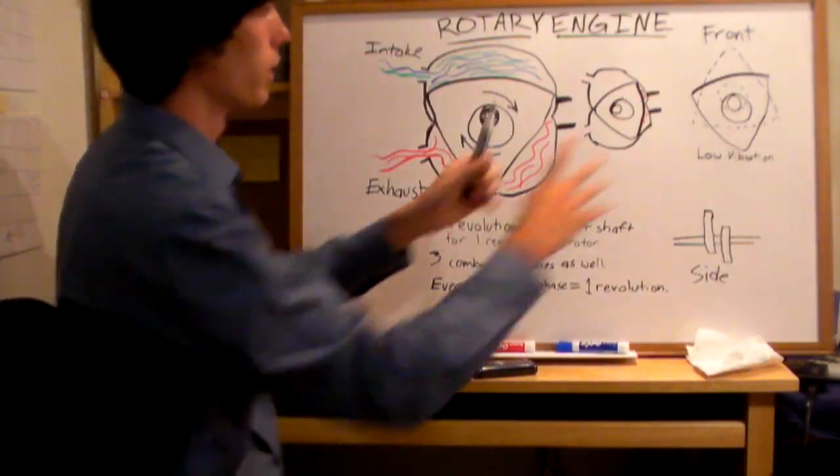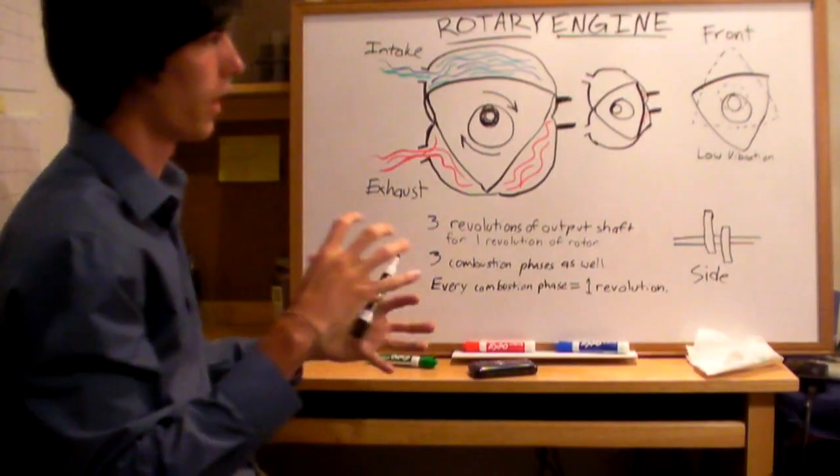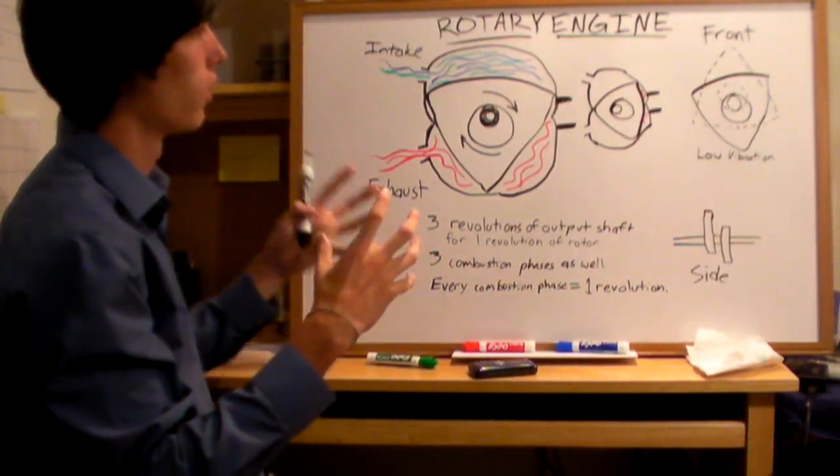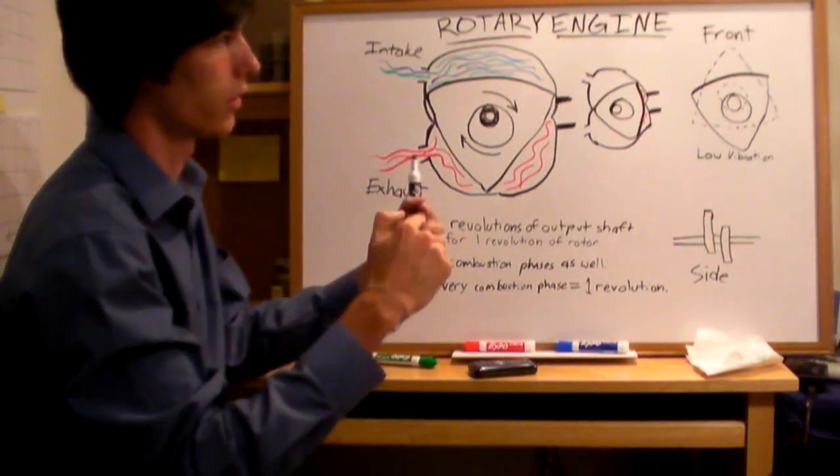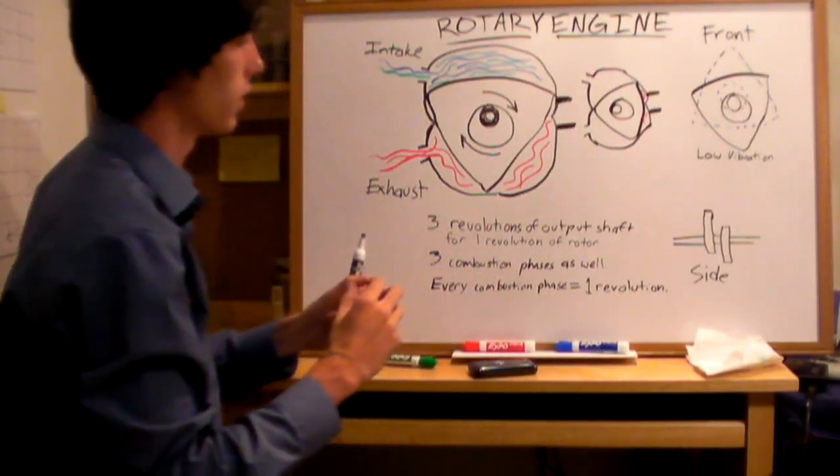The reason you're going to have two of these countering each other in opposite directions is to minimize vibration. If you have the center of gravity on the axis of rotation, you're not going to have any vibration. That's what they're attempting to do there.